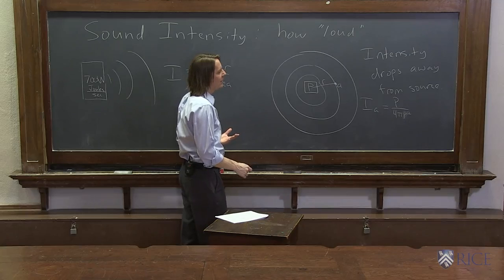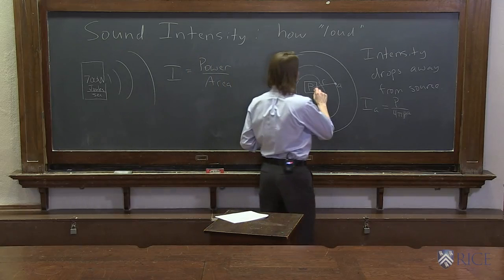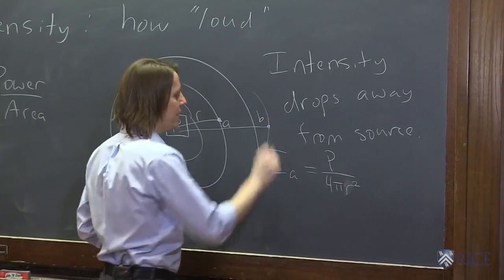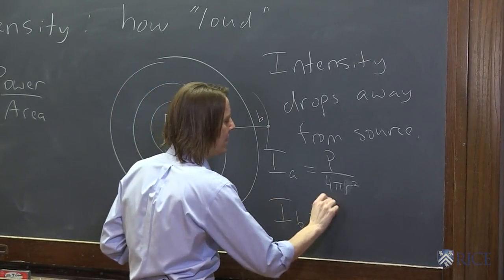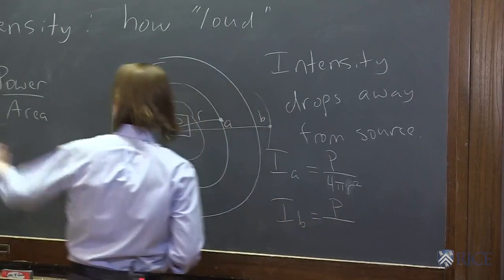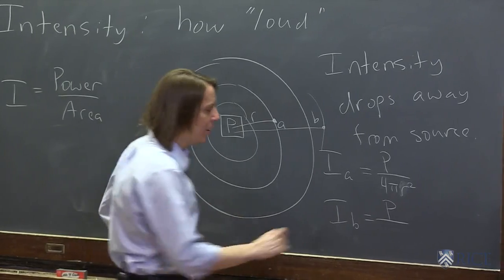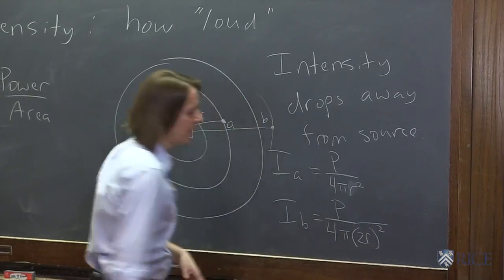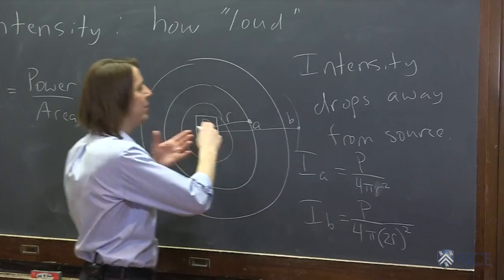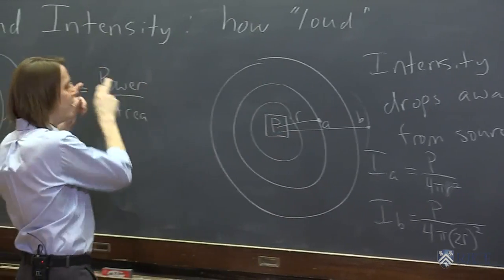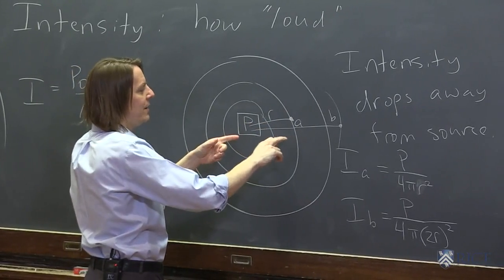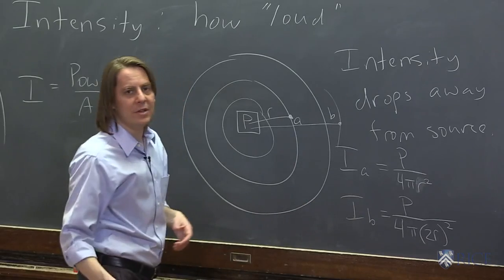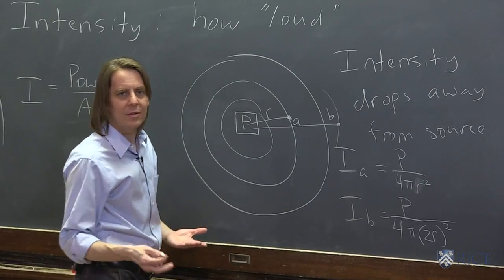But what you're more likely to be asked, is how does the intensity change if you went two times as far away? If you came out here to 2 r, well, you can call that point B. Well, the intensity at point B equals that same power, it's only got a certain amount of power, 700 watts, whatever it is, over 4 pi, and then you'd put 2 r squared. So the 2 would get squared. So since it goes down, since the intensity goes as the area, and the area goes as r squared, the intensity would drop by a factor of 4. Right? Twice as far away, 1 fourth the intensity. Three times as far away, 1 ninth the intensity. Right? You got to square it.